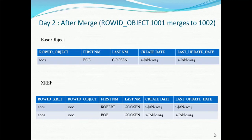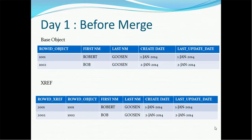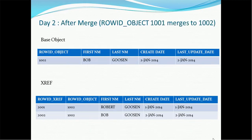After the merge, Row ID 001 merges into Row ID 002, so Row ID 002 becomes the surviving record. The corresponding created date of the surviving record will be populated in the base object. The create date of record 002 was 2 January, and after the merge that record remains with create date 2 January 2014. However, in the XREF, each record retains its individual created date values.